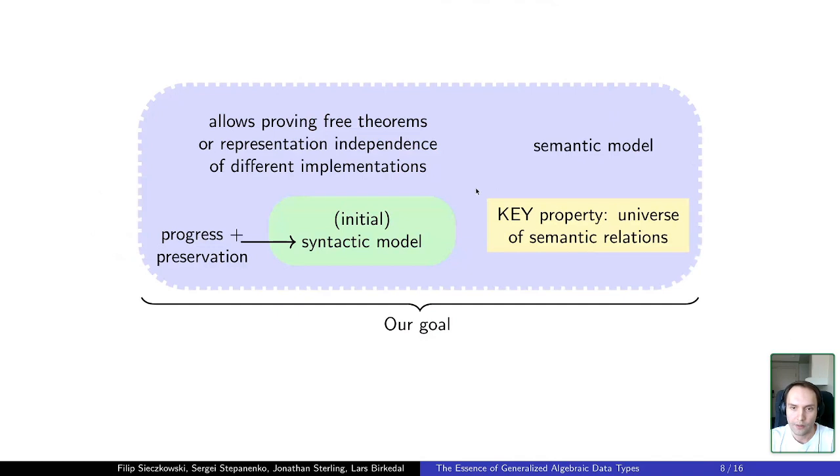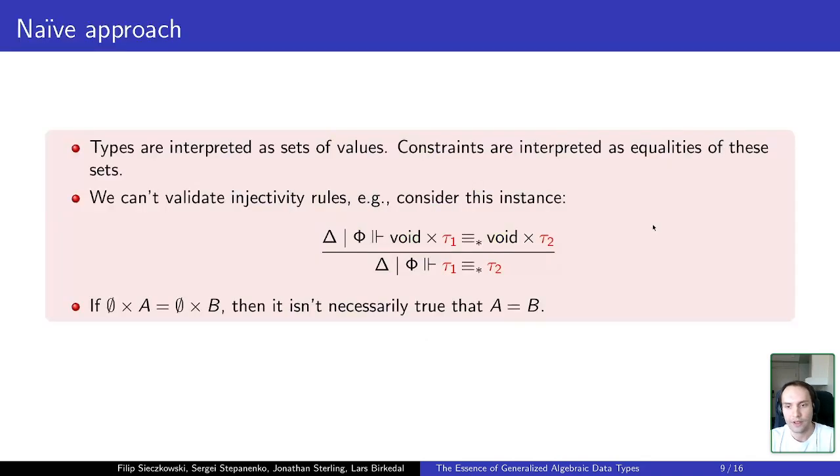And usually when we construct semantical models, we are interested in fixing some universe of semantic relations and using it to reason about programs semantically. But if we try to pursue the most straightforward approach and interpret our types as sets of values, we quickly arrive to some problems.